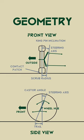Contact patch; caster angle or rake; trail, or mechanical trail, or caster offset; kingpin inclination or steering axis inclination; and finally scrub radius or offset.